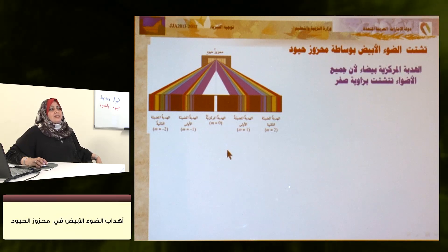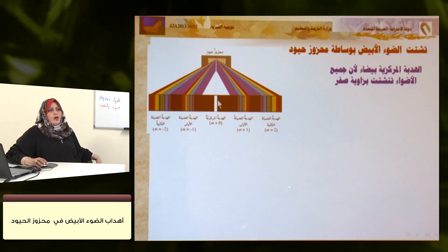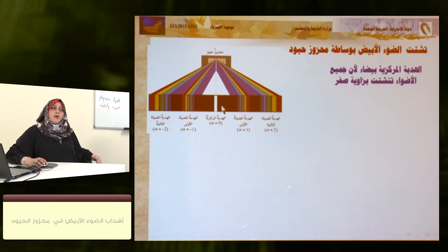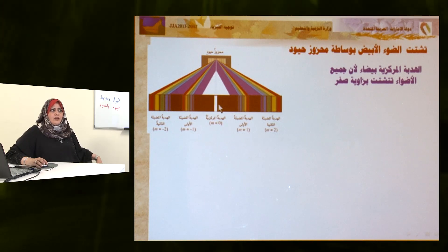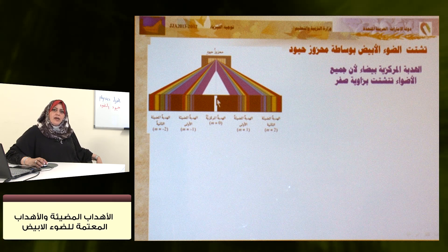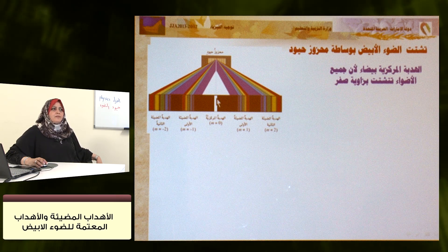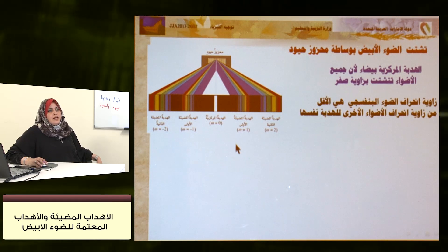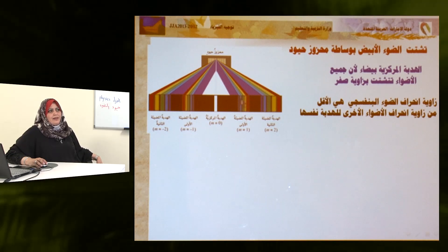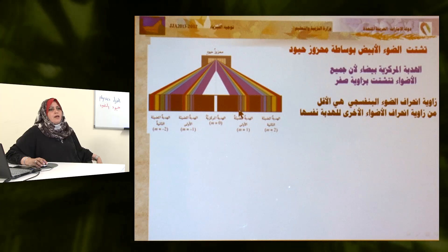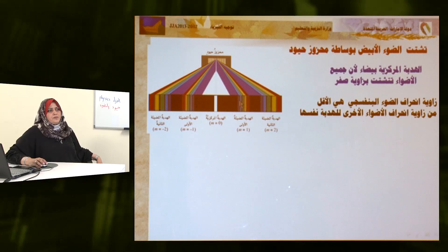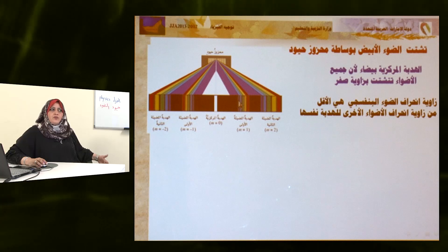يستخدم محزوز الحيود لتشتيت الضوء الأبيض. الهدب المركزي لونه أبيض لأن جميع الأطوال الموجية للضوء الأبيض تتشتت بزاوية مقدارها صفر، فتتجمع جميعها عند المركز. في الهدب الأول نلاحظ أن زاوية انحراف الضوء البنفسجي هي الأقل من زاوية انحراف باقي الألوان.